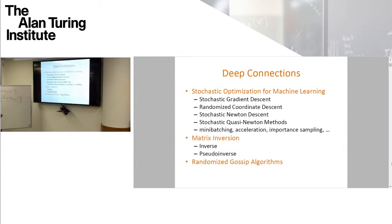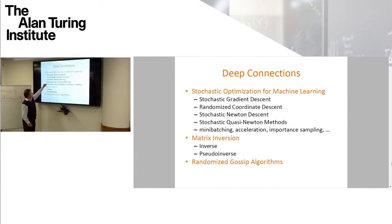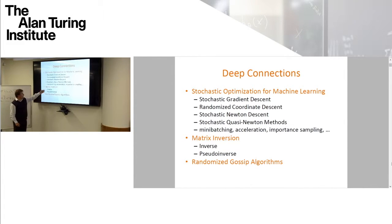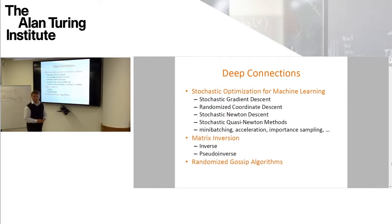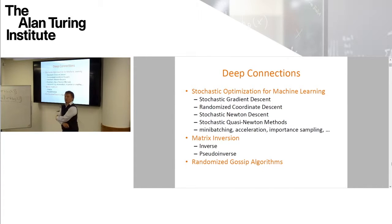Topics include stochastic Newton descent, stochastic quasi-Newton methods, computing inverses of very large matrices, and connections to the randomized Kaczmarz literature, and so on.